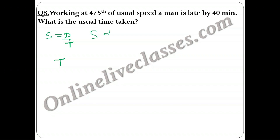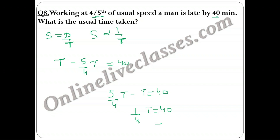So (5t/4 − t) = t/4 = 40 minutes, giving t = 160 minutes, or 2 hours 40 minutes. This is the normal time taken. The key concept is that speed and time are inversely proportional for a fixed distance. Kindly pause the video and note down the solution, then move on to the next question.